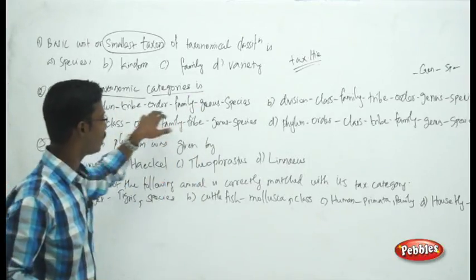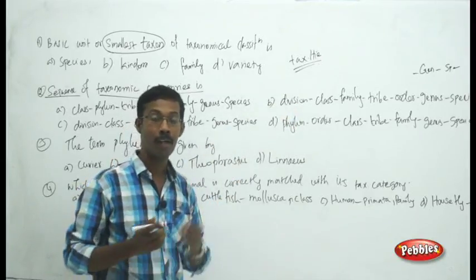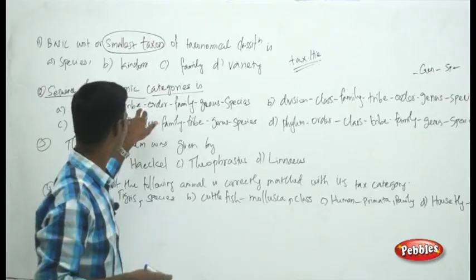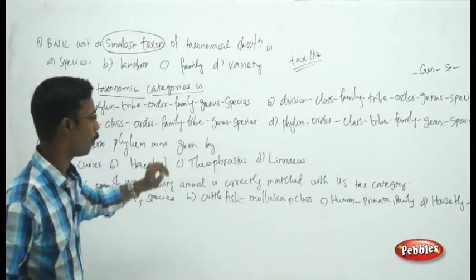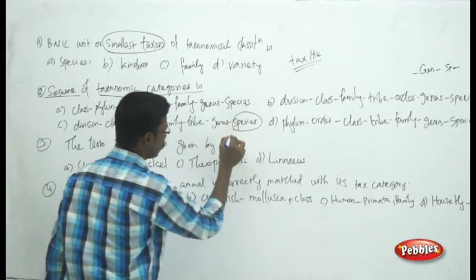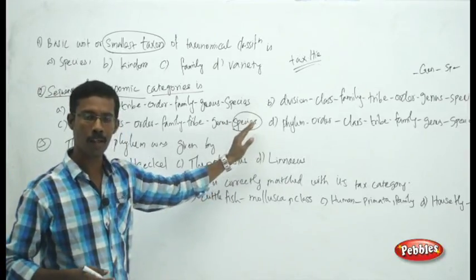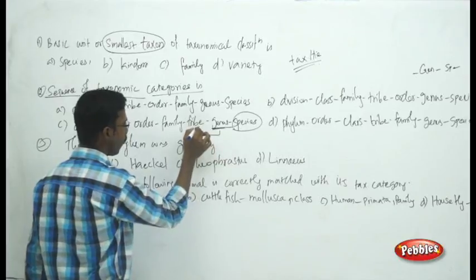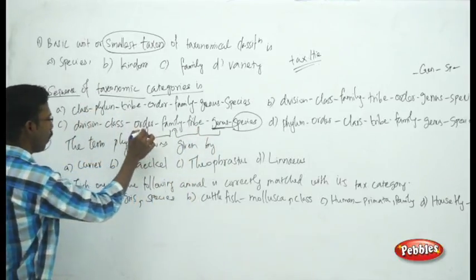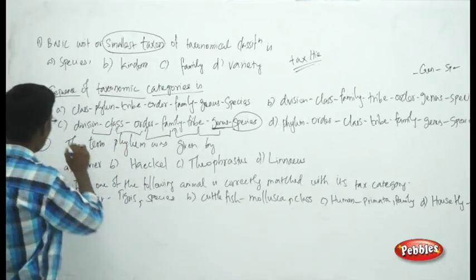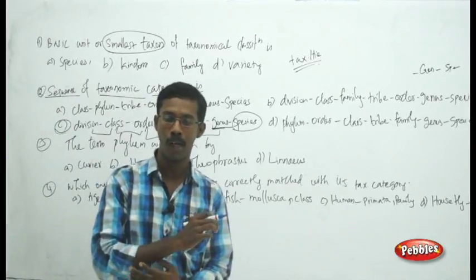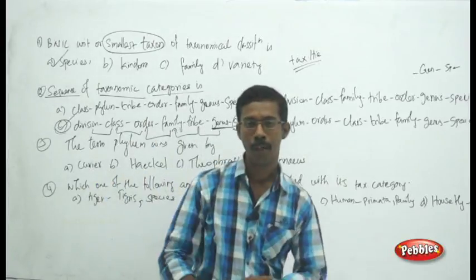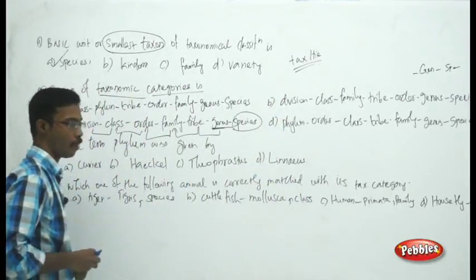The correct hierarchical sequence of taxonomic categories goes: species, genus, tribe, family, order, class, then division. One of the answer choices lists class, phylum, tribe, order, family, genus, species. The basic unit is species, and similar species are grouped into genus, similar genera into tribe, tribes into family, families into order, then class, then division. The answer for question two is C, and for question one, the answer is species — the smallest taxon in the taxonomical hierarchy.